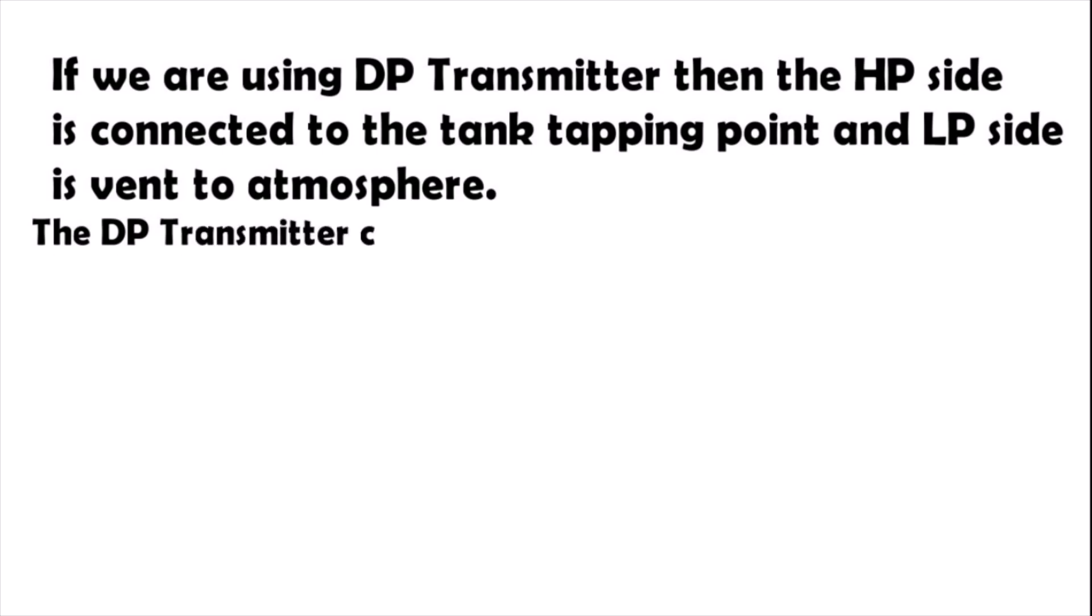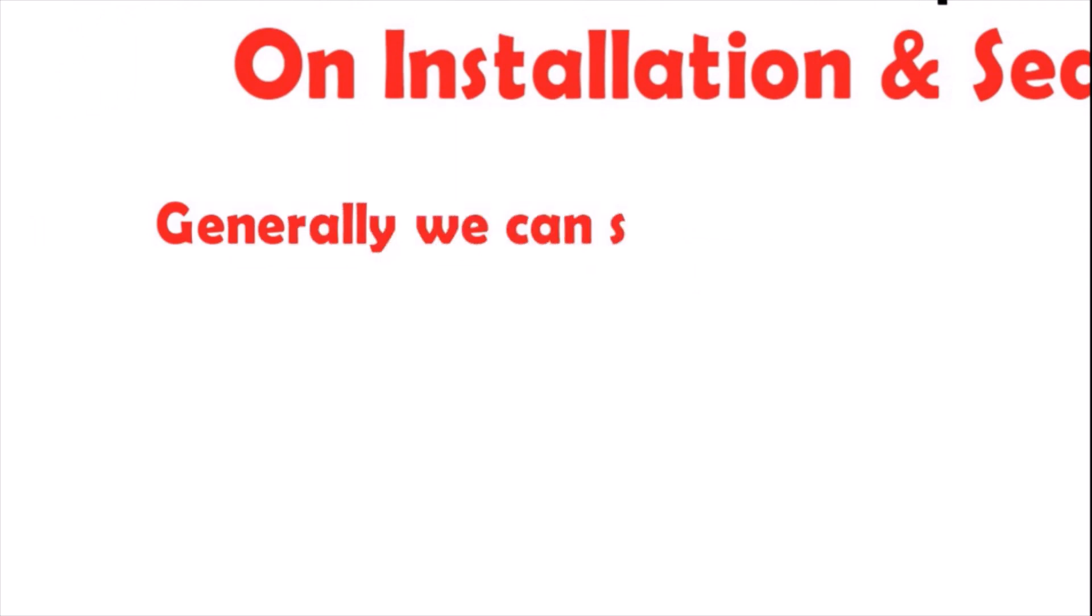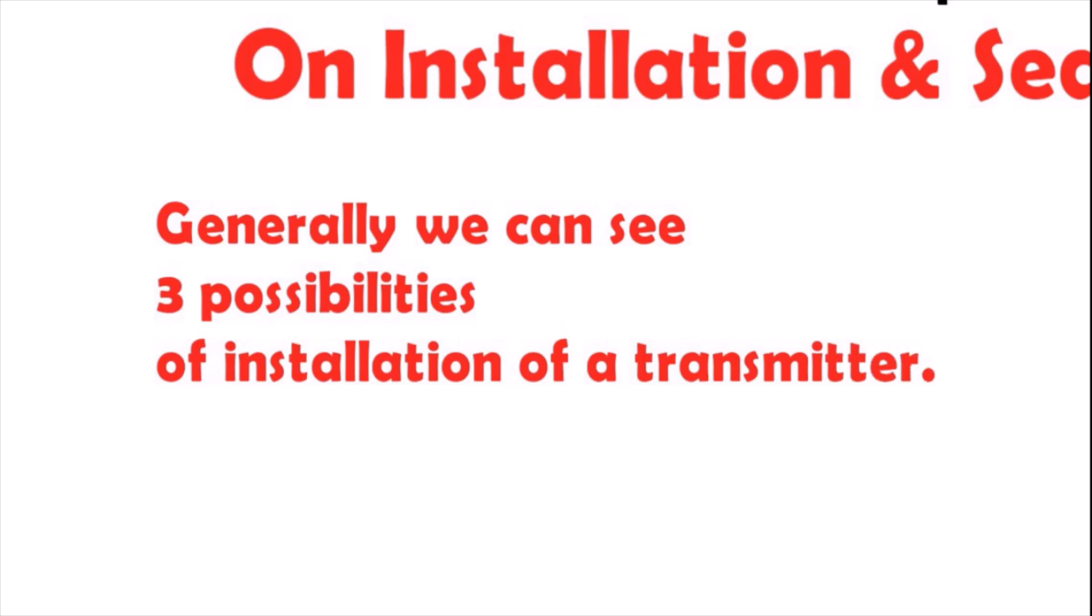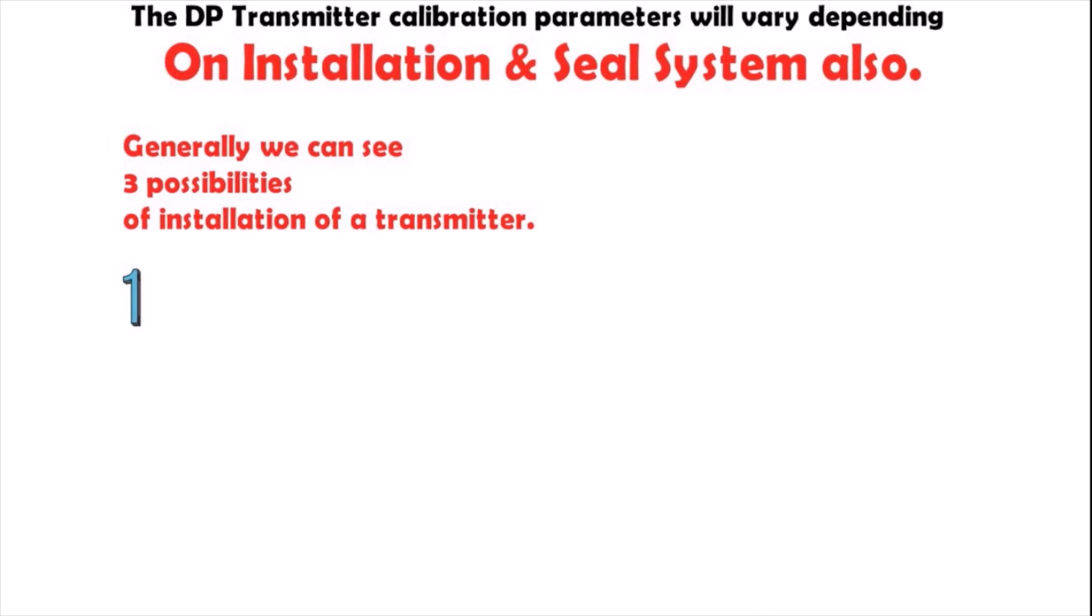The DP transmitter calibration parameters will vary depending on the installation and seal system. Generally, we can see three possibilities of installation of a transmitter. The first case: the transmitter is